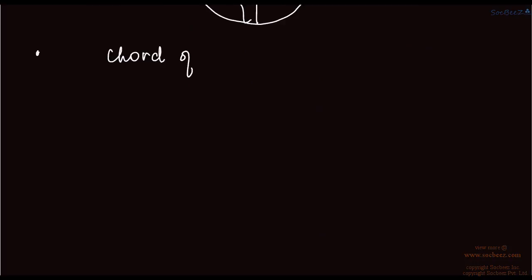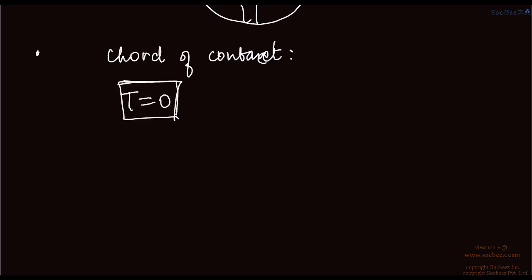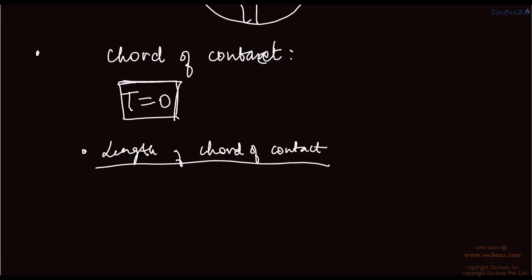The next topic is chord of contact. Chord of contact is always given by T equals 0 in any conic — ellipse, parabola, hyperbola, or circle — it is always given by T equals 0. The length of the chord of contact is 2LR divided by root of R squared plus L squared.